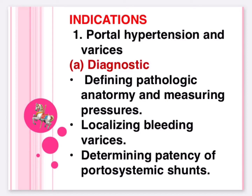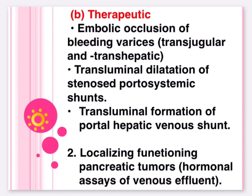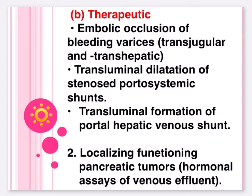Indications include: one, portal hypertension and varices — diagnostic purposes such as defining pathologic anatomy and measuring pressures, localizing bleeding varices, and determining patency of portosystemic shunts. Therapeutic indications include embolic occlusion of bleeding varices via trans-jugular and trans-hepatic approaches, transluminal dilatation of stenosed portosystemic shunts, and trans-luminal formation of portal-hepatic venous shunts. Two, localizing functioning pancreatic tumors by hormonal assays of venous effluent.